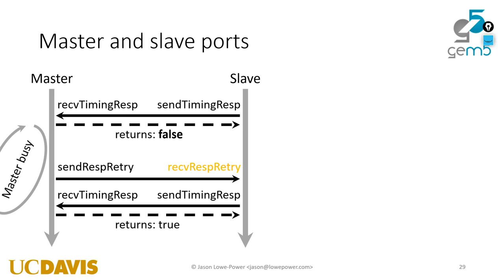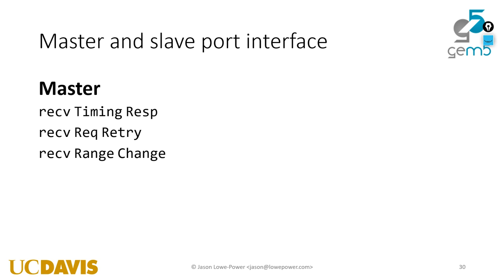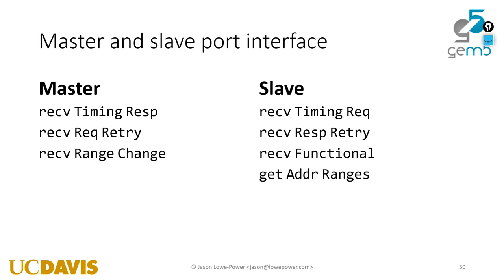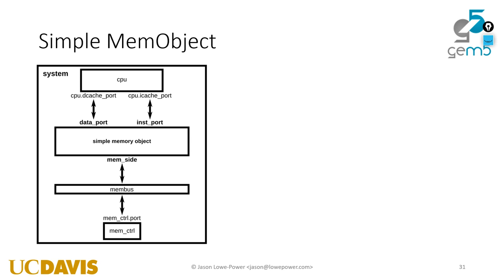This is not exactly the way things are implemented in hardware, but it is a good API for creating event-driven simulations. If you want to make a sim object that has a master port or a slave port, you need to implement the receive responses on the master side and the receive requests on the slave side. We'll look at each one of these one at a time.